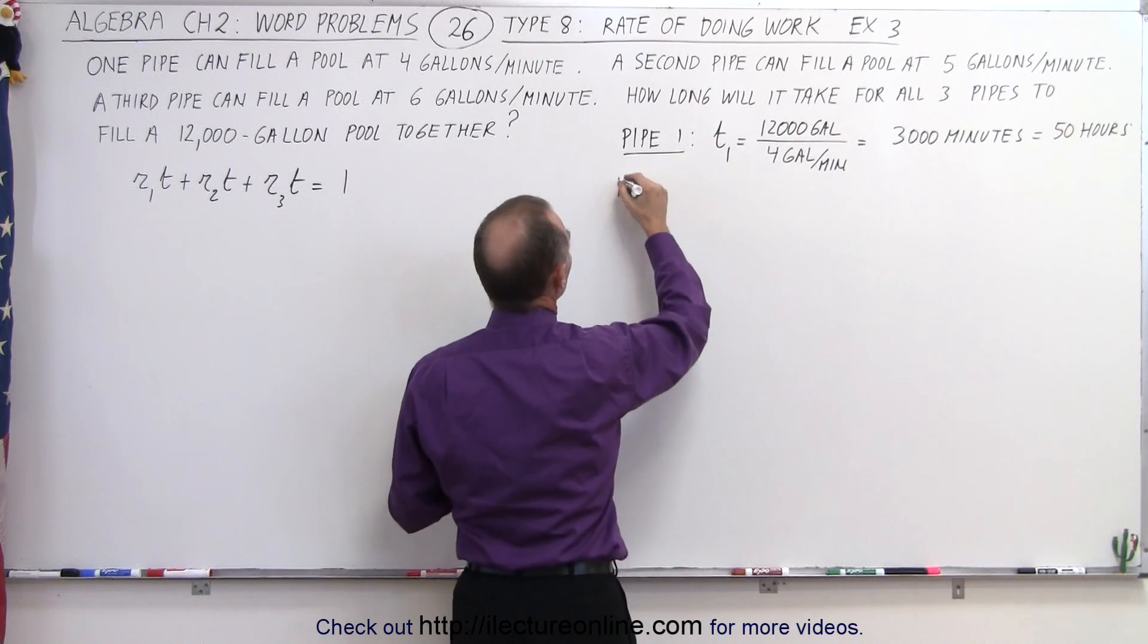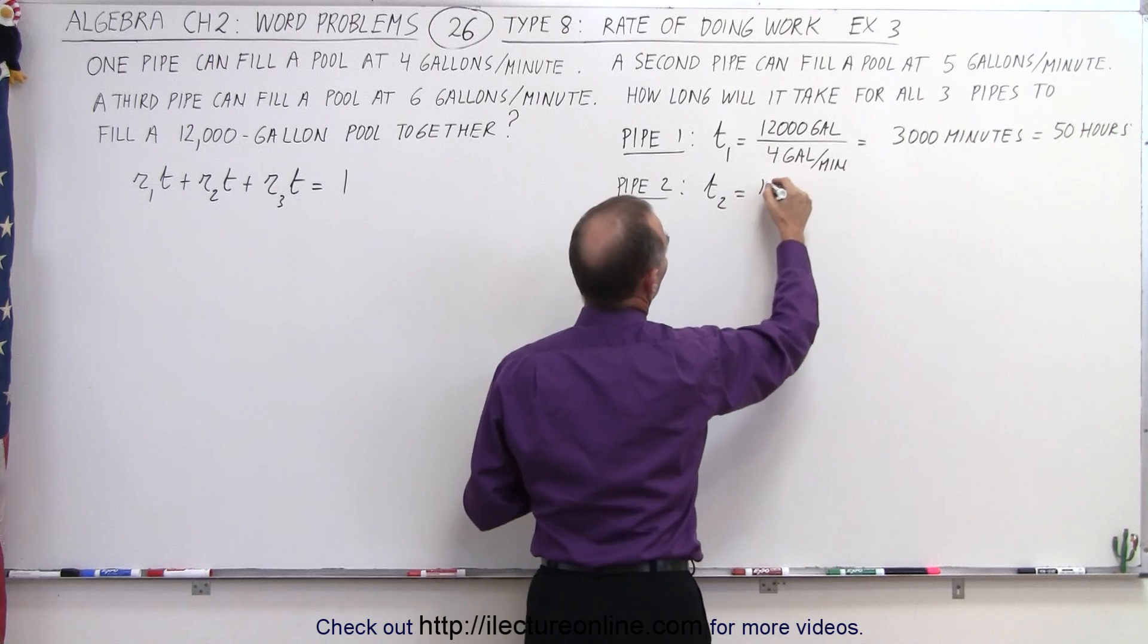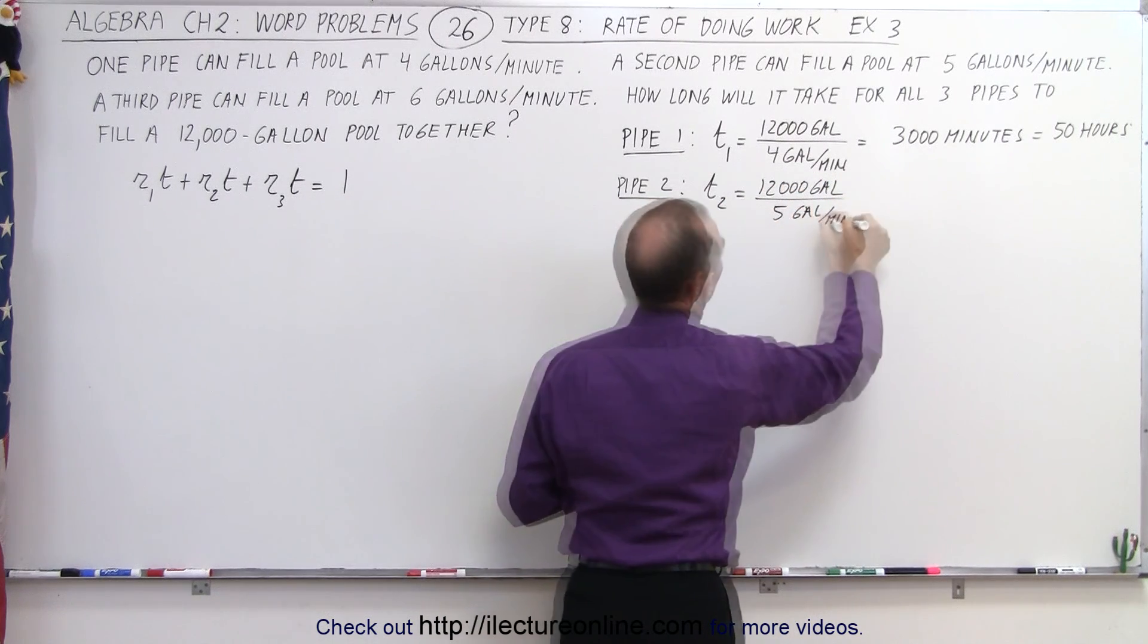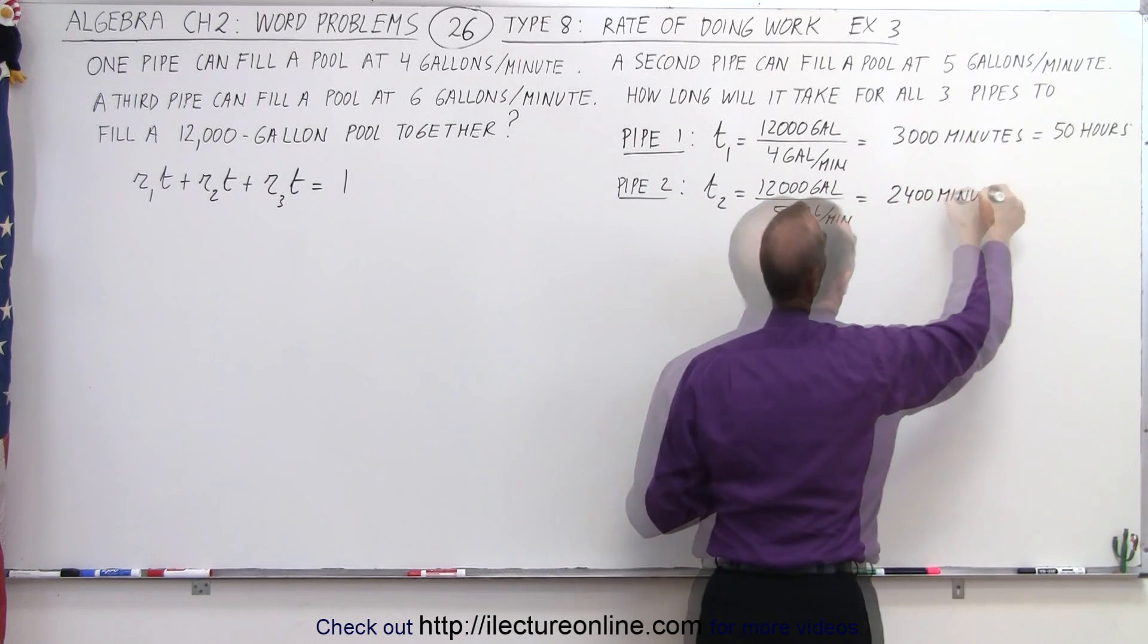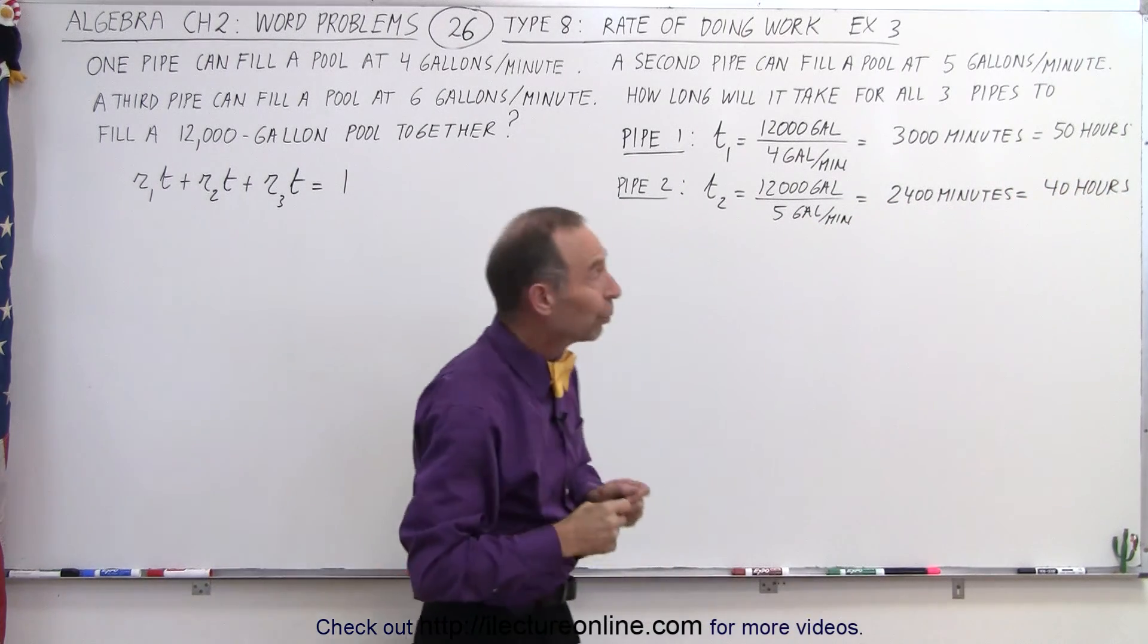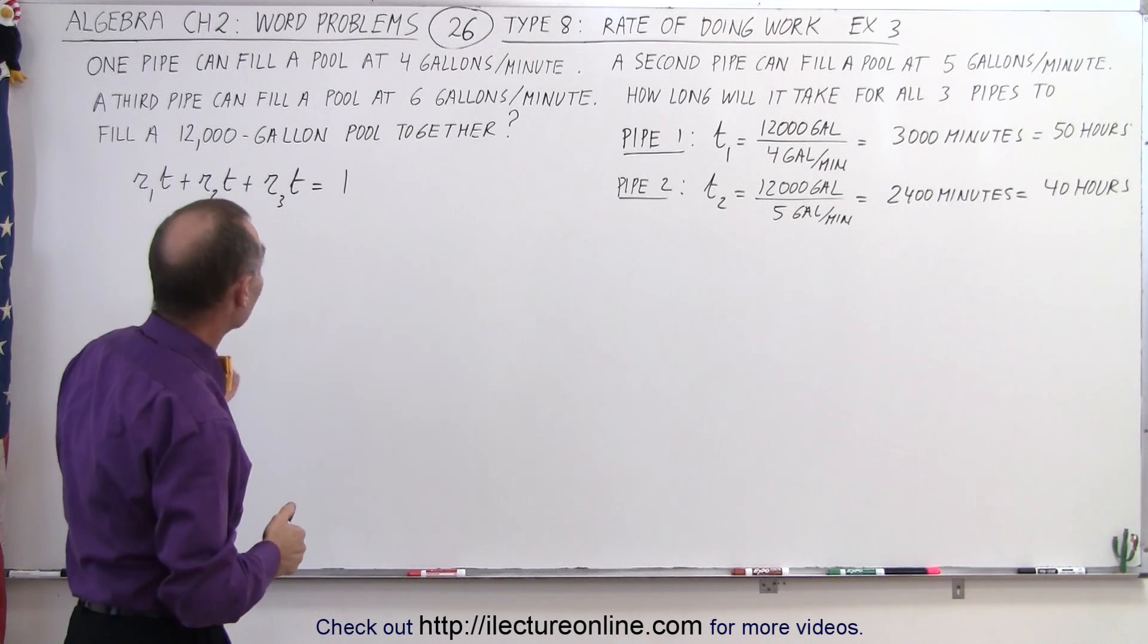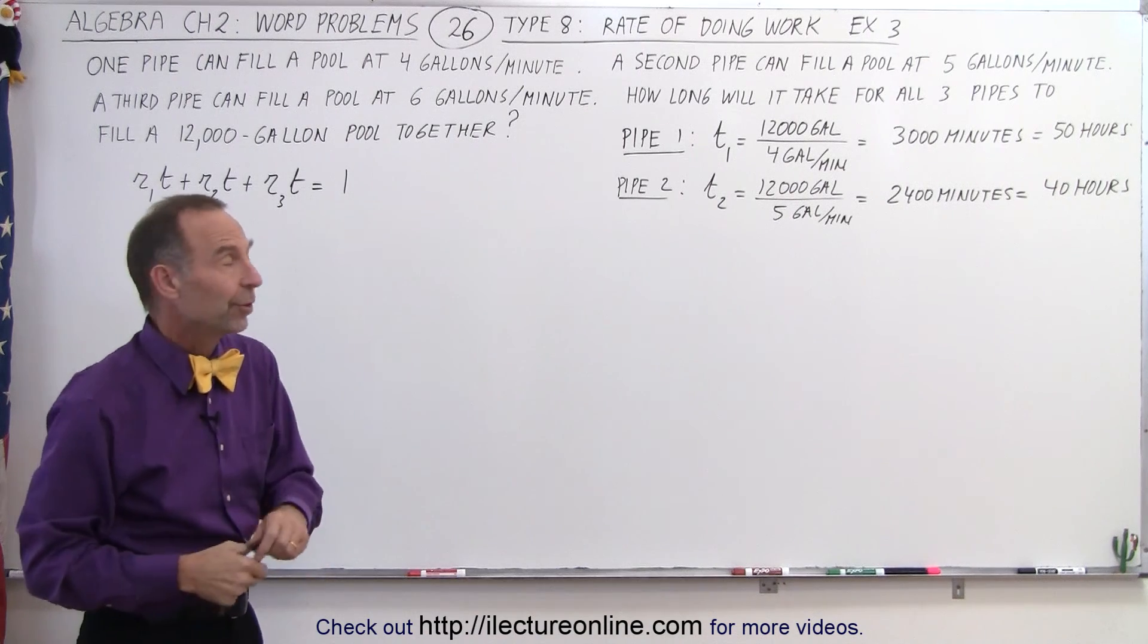For pipe 2, the time T2 is equal to 12,000 gallons divided by 5 gallons per minute, which would be equal to 2,400 minutes. And then convert that to hours, that would be 40 hours. Since the second pipe can fill the pool at 5 gallons per minute, which is 1 gallon more per minute than the first pipe, it can do the whole job by itself in 40 hours.